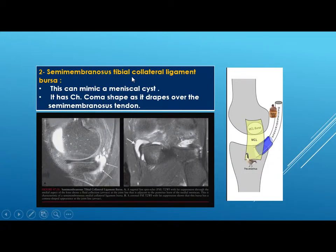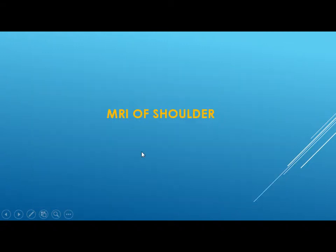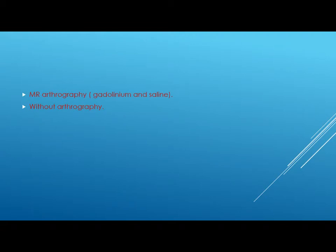The semimembranosus-tibial collateral ligament bursa is the second bursa present medially. It can mimic a meniscal cyst and has a characteristic comma shape as it drapes over the semimembranosus. On the sagittal image a bursa lying medially is seen, and on the coronal image it has a characteristic comma shape, which is diagnostic for this bursa.